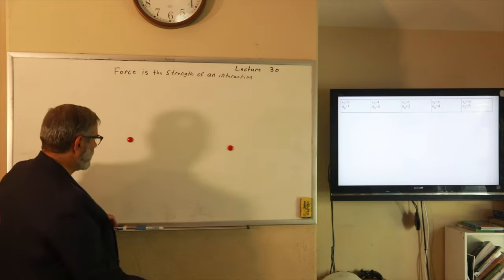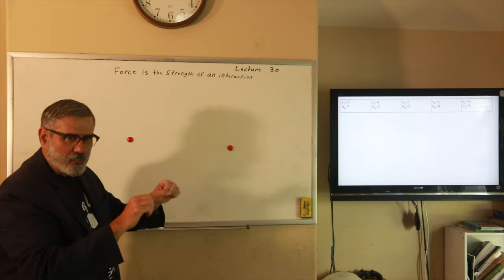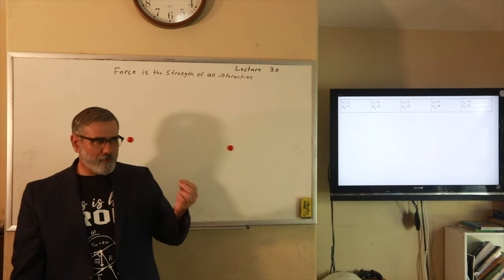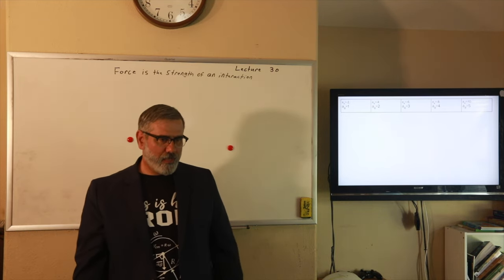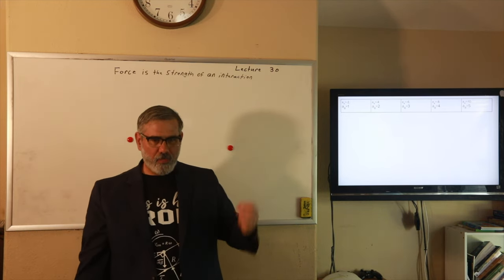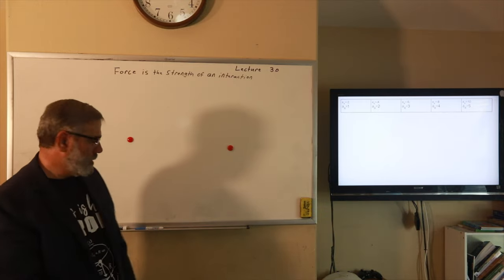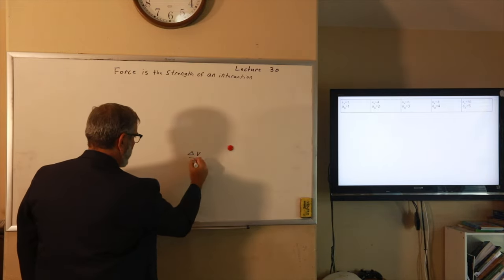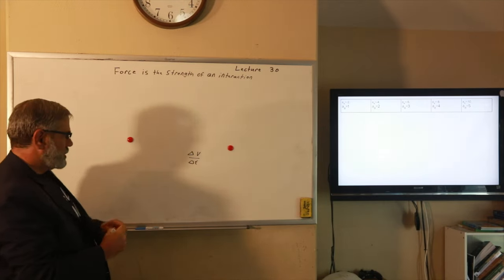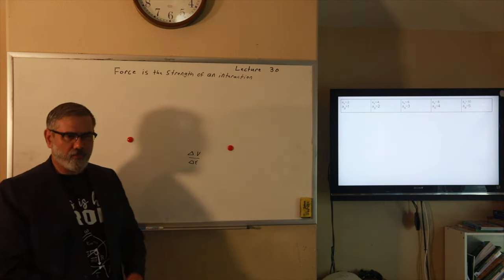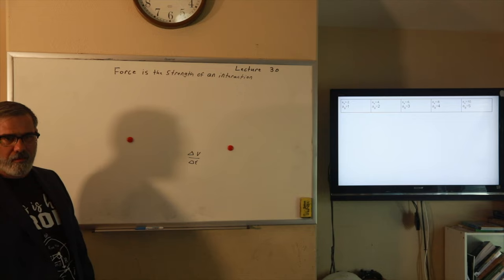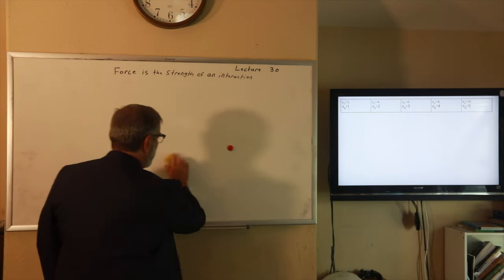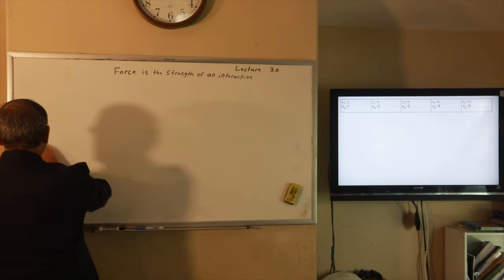We're also careful to observe how long they're actually touching — that'll be some time period Delta T. And if we take Delta V divided by Delta T, what do we get? That's the change in velocity divided by the change in time — that's acceleration, of course. So our observer is keeping track of the acceleration.